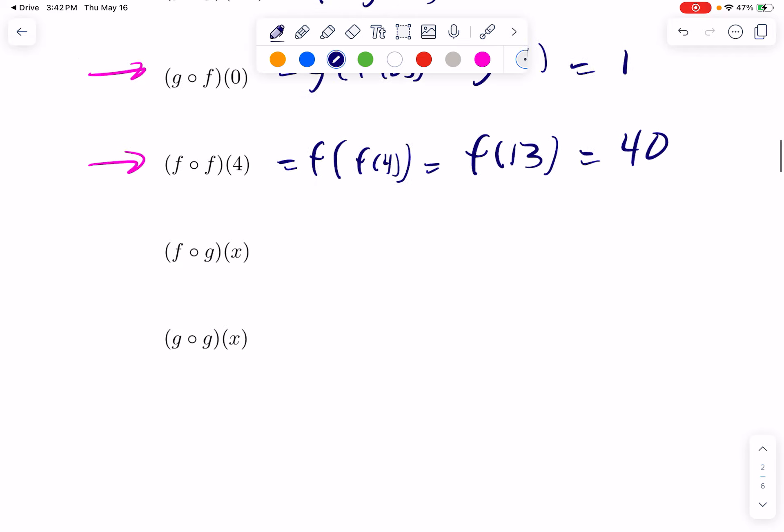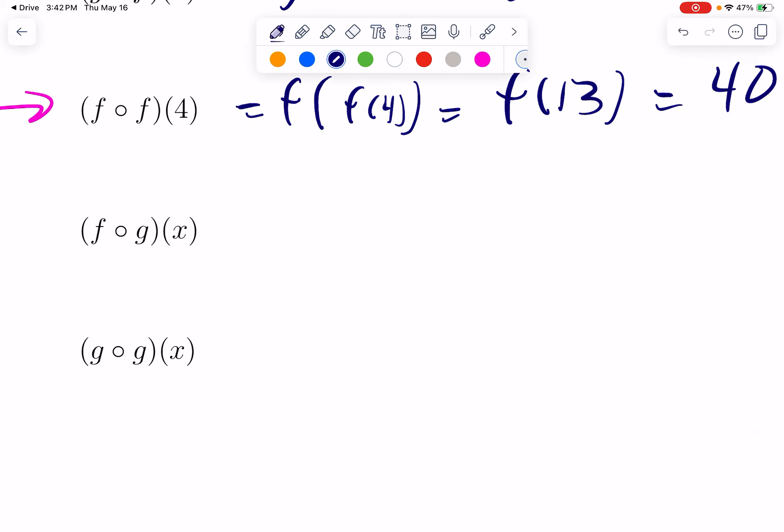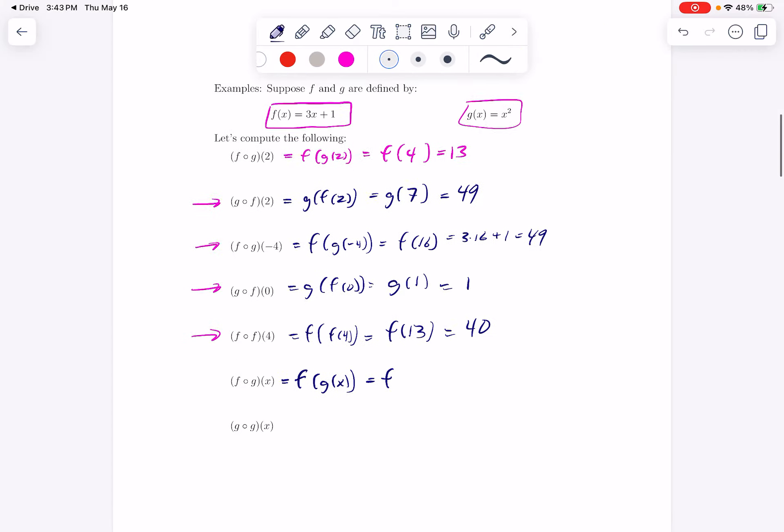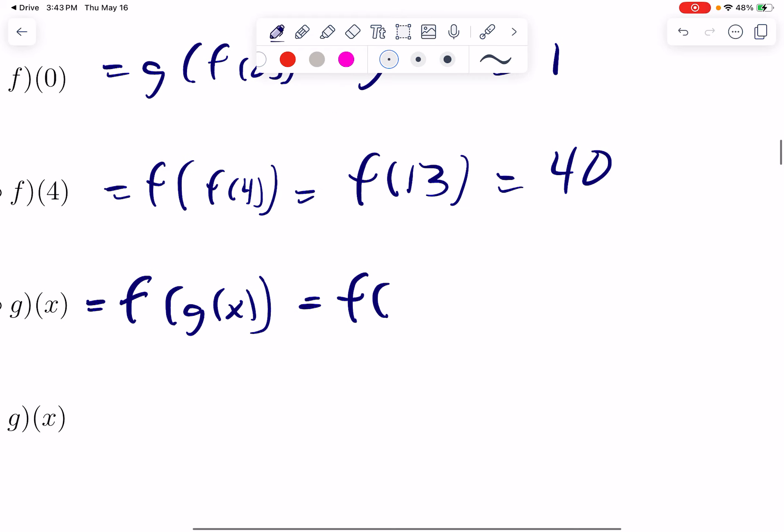Now for these last ones, we're going to have a formula. We're not computing a specific number. We're thinking, okay, this is some expression with an X in it, but can I make it simple? So get the ball rolling by just write it with the parentheses instead of the circle. And G of X, we know, is X squared. So this is F of X squared.